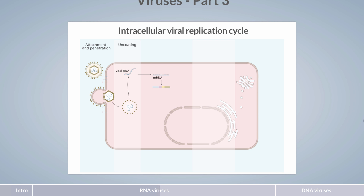IRES enable translation initiation to commence in the middle of an mRNA strand. The coding capacity of an mRNA strand can also be increased by splitting the translated peptide chain into several entities, which fold into separate functional proteins. The first viral proteins to be translated are those involved in replication processes, often referred to as early proteins. They are mainly catalytically active and therefore synthesized in smaller amounts.